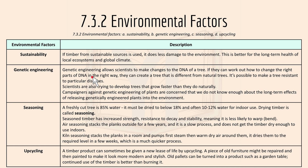Genetic engineering allows scientists to make changes to the DNA of a tree. If they can work out how to change the right part of DNA in the right way, they can create a tree that is different from natural trees — for example, making a tree resistant to a particular disease. Scientists are also trying to develop trees that grow faster than they do naturally. However, some campaigners are against genetic engineering of plants because they are concerned we do not know enough about the long-term effects of releasing GMOs into the environment.